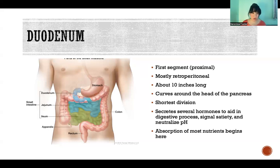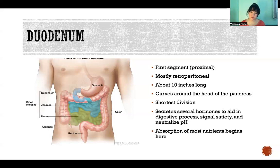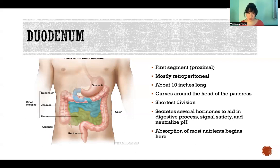Absorption of most of our nutrients begins in the duodenum. This is the major point of absorption for most of our vitamins, minerals, proteins, fats, and carbohydrates. There's a little bit of absorption of a couple of different things in the stomach, and then absorption of specific nutrients happens in certain segments of the small intestine and the large intestine. But the majority of our nutrients begin to be absorbed in the duodenum.